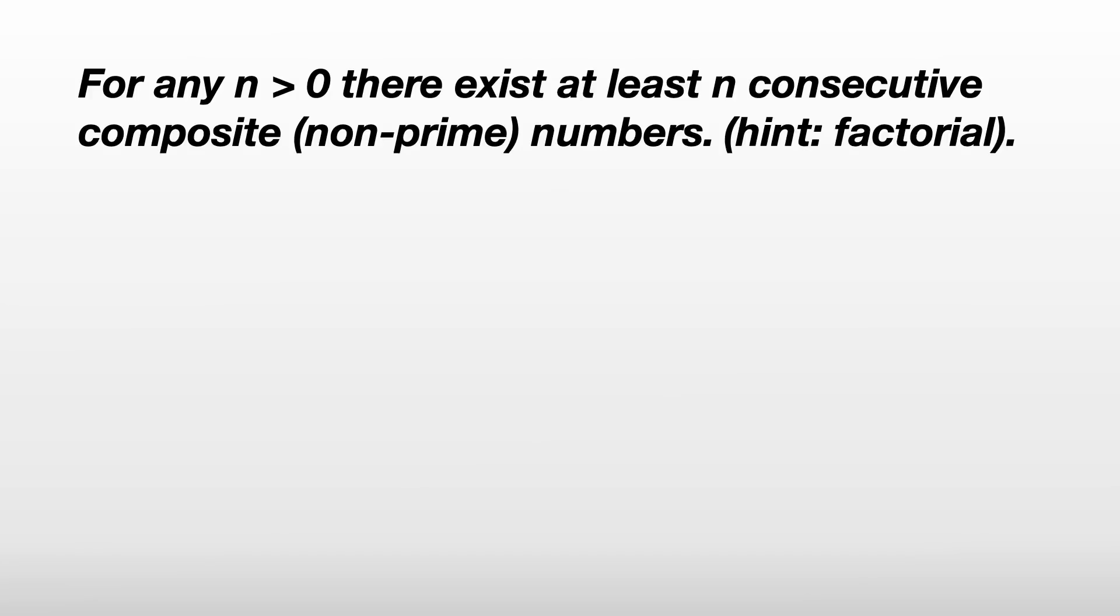So, just a reminder, n factorial is the product of all integers 1 to n. So, 4 factorial is 4 times 3 times 2, which is 24.